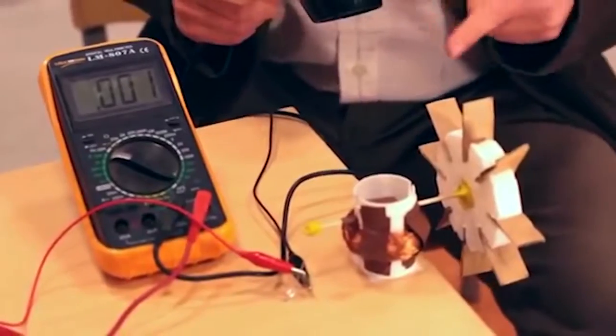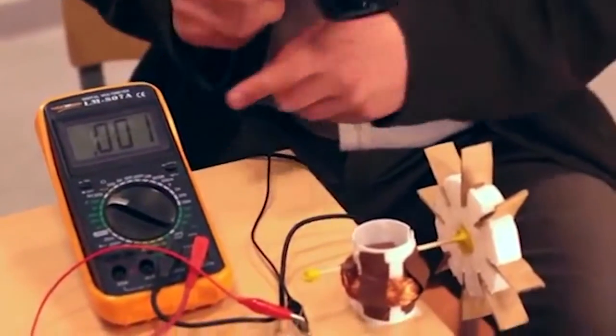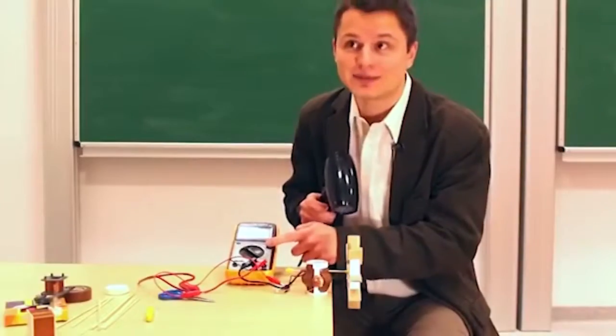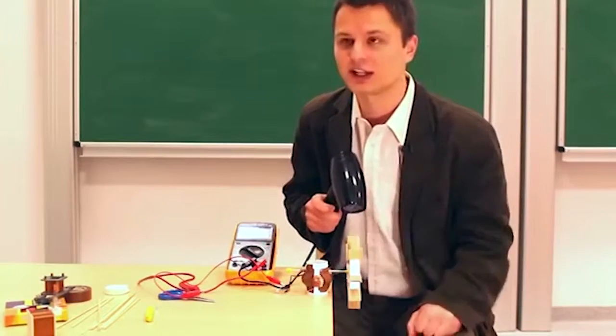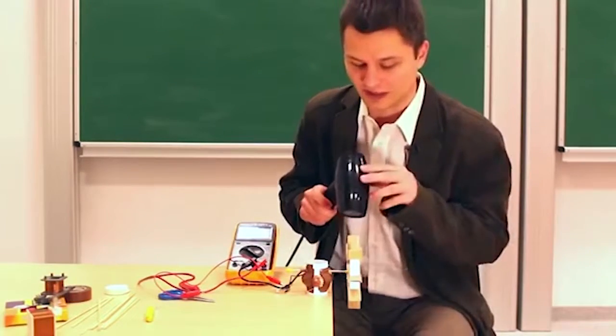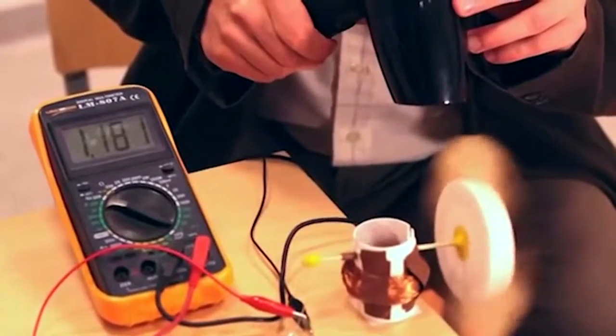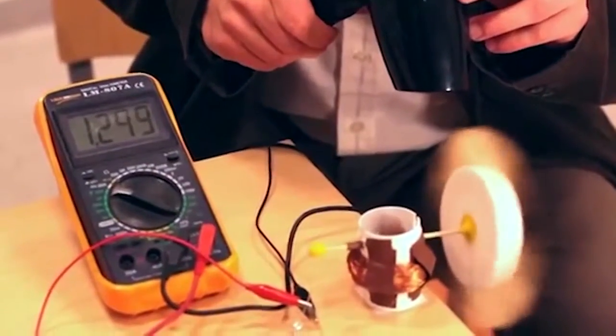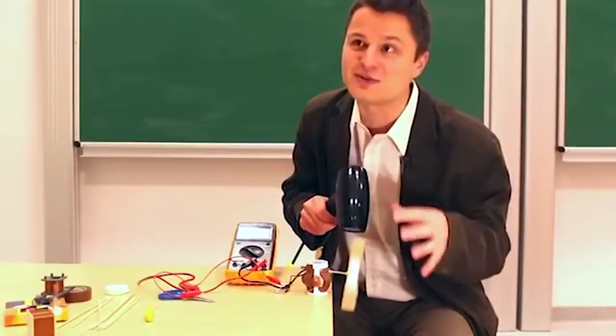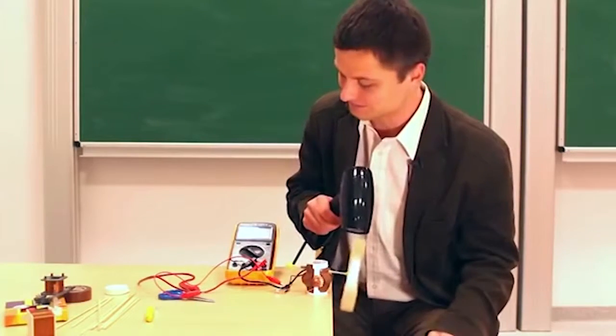We can also connect a multimeter to our system, to the turbine and LED, and check what voltage we can generate with our small model wind turbine. We see that it is somewhat above 1 volt. This may seem a bit low, but for such a small model, not bad at all.